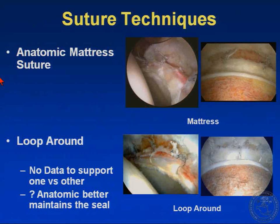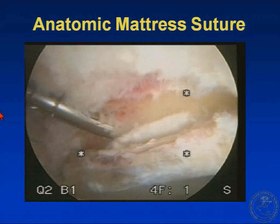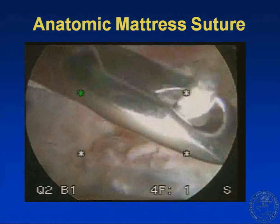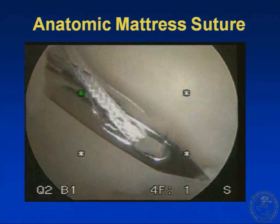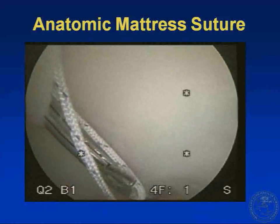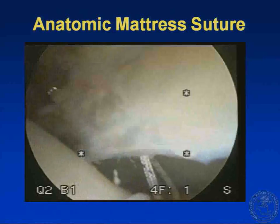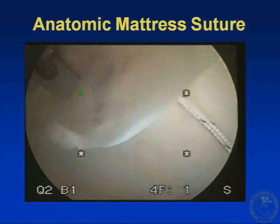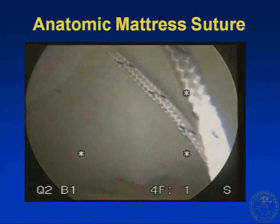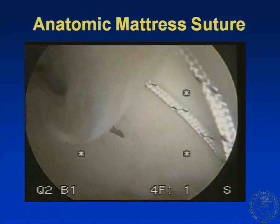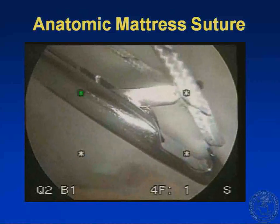There are two primary suture techniques. One is a mattress suture, which I think is more anatomic, and the other is a loop-around type suture. There is really no data to support one over the other, though the question in my mind is whether the mattress suture creates a more anatomic seal. For the mattress stitch, a suture anchor is placed in the acetabular rim, the labrum is taken down, one limb of the suture is passed underneath the labrum, and then the same device passes through the base of the labrum. Passing through the base prevents the suture from constricting the labrum and leaves the free edge to recreate the seal, maintaining the triangular portion of the labrum.